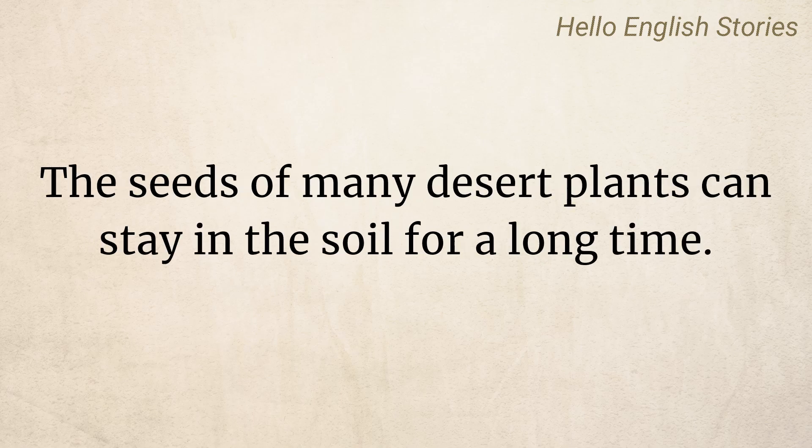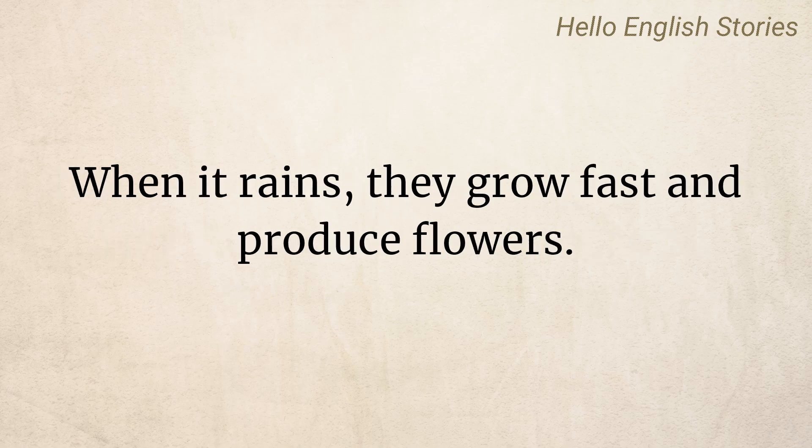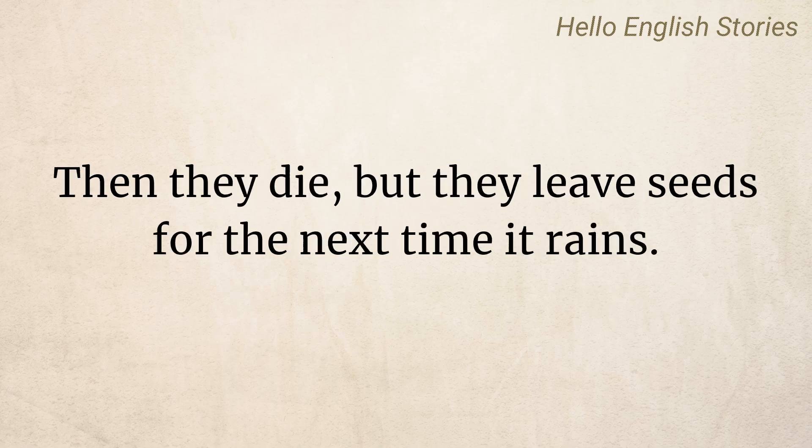The seeds of many desert plants can stay in the soil for a long time. When it rains, they grow fast and produce flowers. Then they die, but they leave seeds for the next time it rains.